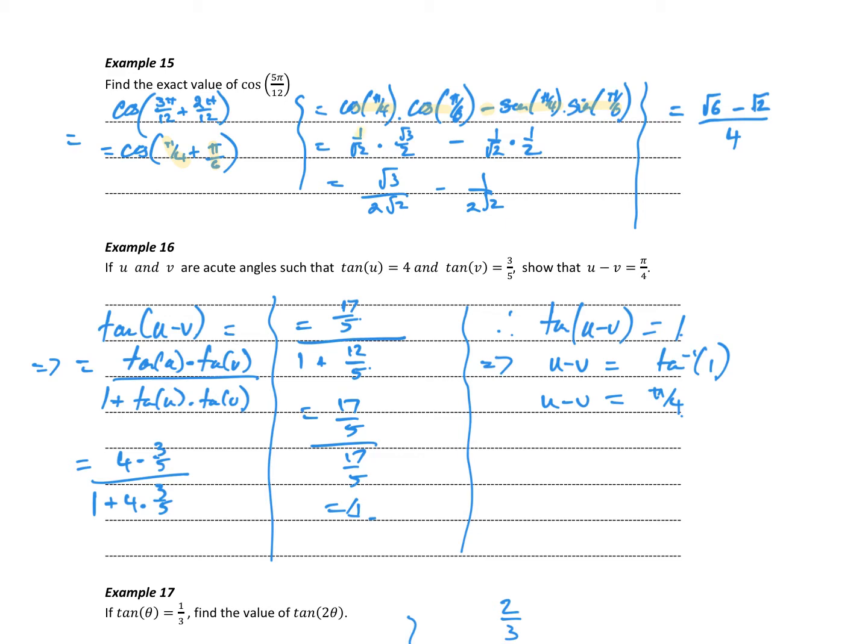So cos π on 4, which is 1 on root 2, cos π on 6, which is root 3 on 2, subtract sine π on 4, 1 on root 2, sine π on 6, which is a half. And we get a similar looking expression to the one on the previous page. Multiply top and bottom by root 2, and we'll get our root 6 minus root 2 on 4, which again is the same as our calculator dump.